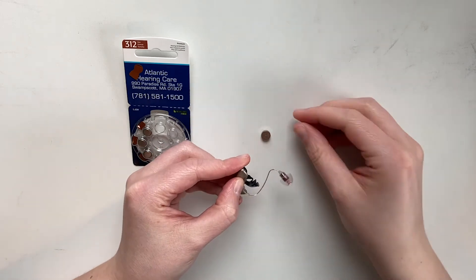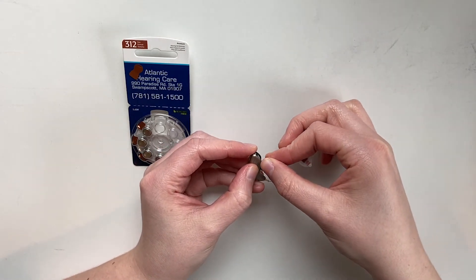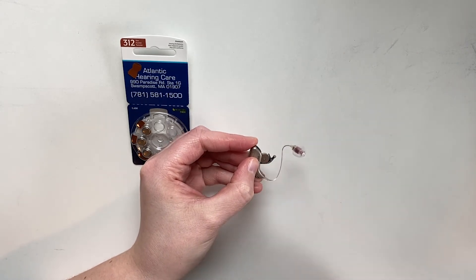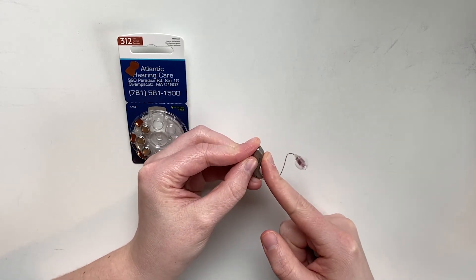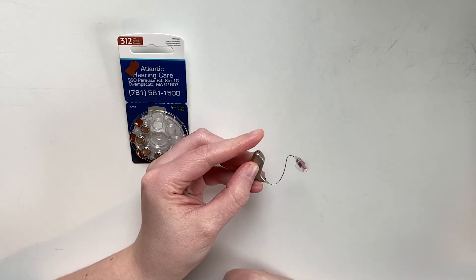We're going to take the hearing aid and the battery. We lower the battery right into that battery door, flat side facing up at us, and then we can press that shut. Now your battery is in place and your hearing aid is on.